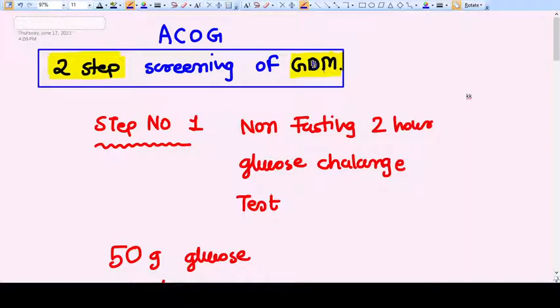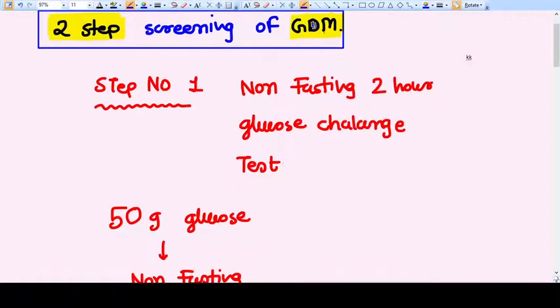Hello everyone, in this video we are going to discuss the fourth capsule video. In this video we are going to talk about ACOG two-step screening for gestational diabetes mellitus, that is GDM. Now let's start with step number one.